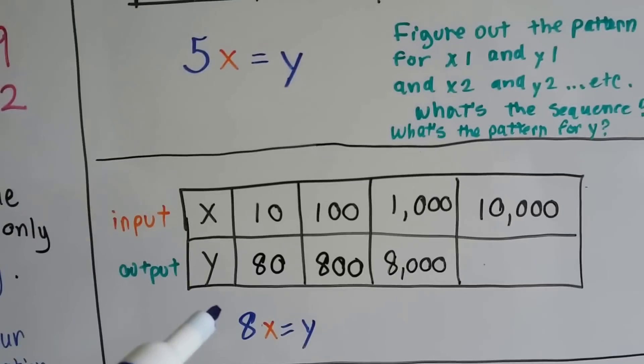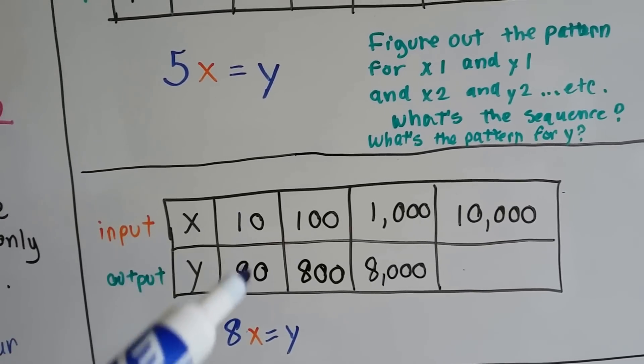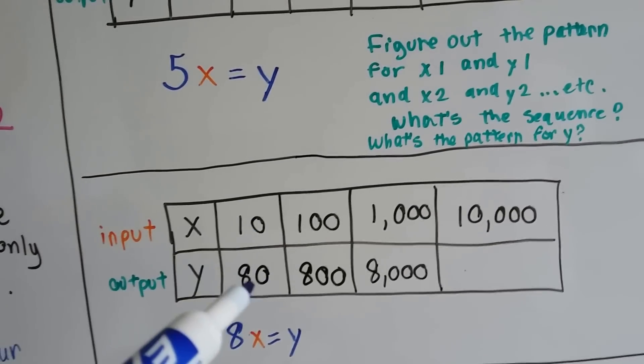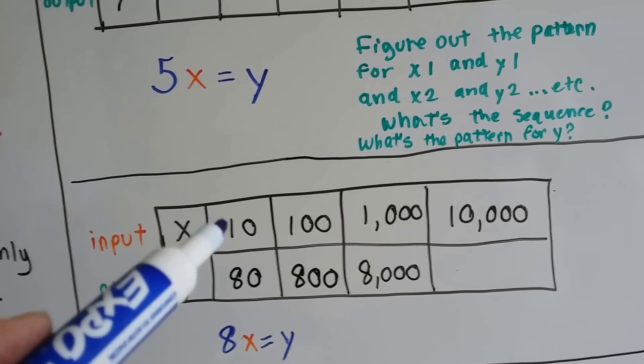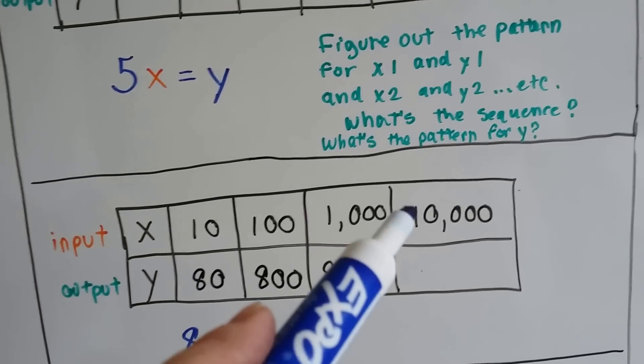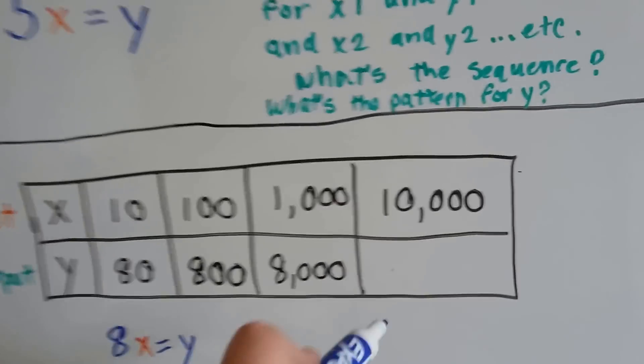Here, the equation is going to be 8x equals y, because you can see 10 times something is 80. 10 times 8 is 80. So 8 times this x is going to equal the y. So 8 times 10,000 is 80,000.